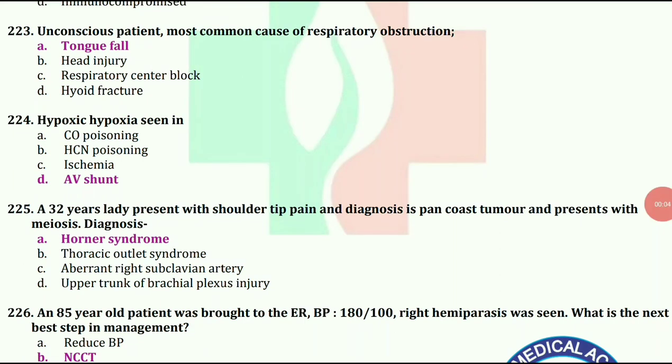An 85-year-old patient was brought to ER. Blood pressure is 180/100, right hemiparesis was seen. What is the next best step in management? The answer is NCCT.